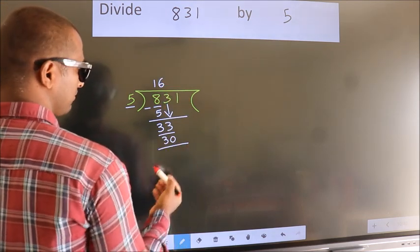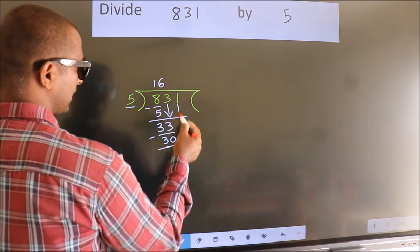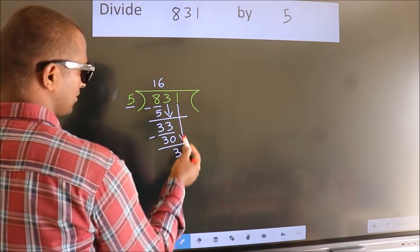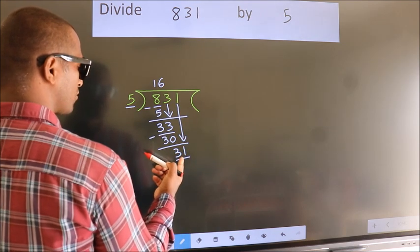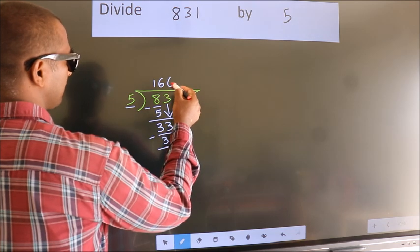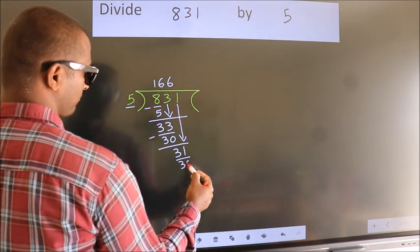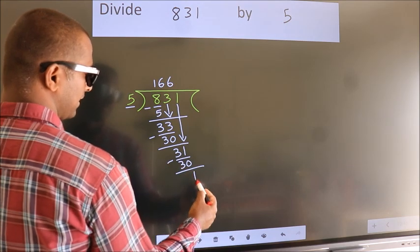Now, we subtract. We get 3. After this, bring down the beside number. So, 1 down. So, 31. A number close to 31 in 5 table is 5, 6, 30. Now, we subtract. We get 1.